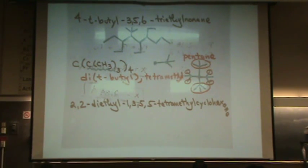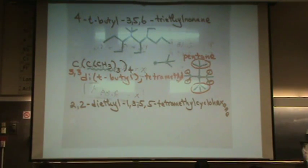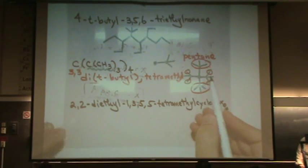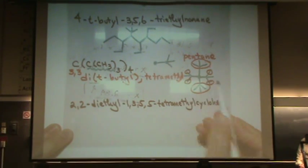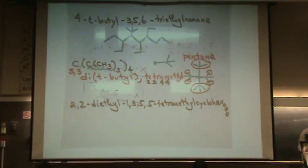The other thing we want to figure out is the numbers. It's not really going to matter because it's totally symmetric. So whatever side you count from won't matter. But both of the t-butyls are on the third position, so it'll be at 3,3. And the tetramethyls are the one, two, three, four. So 2,2,4,4 for the tetramethyl.